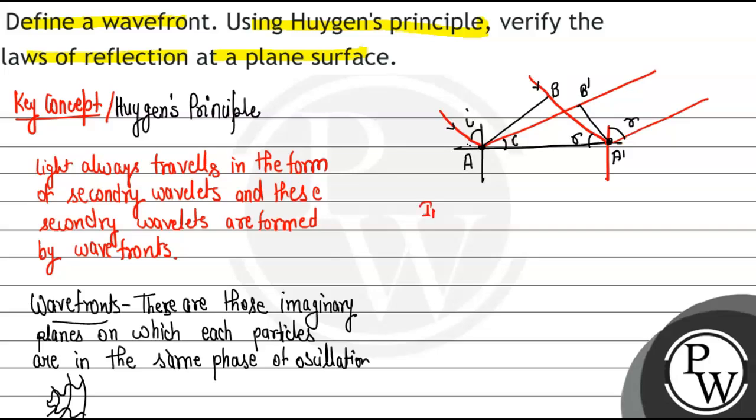Now in triangle ABA', we can apply sine i. So sine i is going to be A'B upon AA', right. And similarly in triangle AA'B', if you apply sine r, this angle is sine r, which will be AB' upon AA', right. Now if you notice, this value AB' is the distance traveled by the speed of light in a particular time, and BA' is also the same distance traveled by the light in the same time, right.